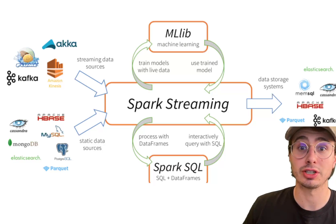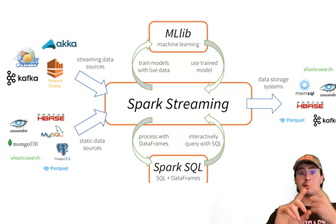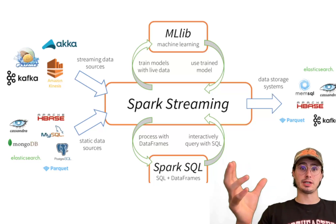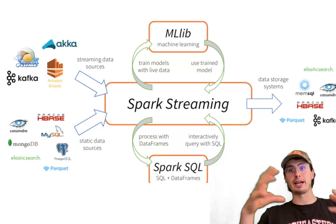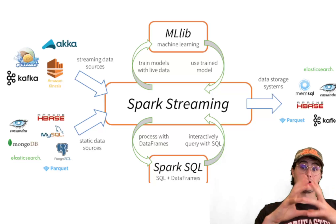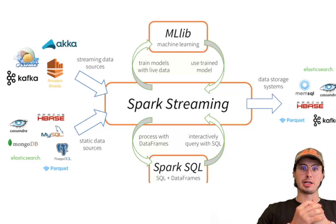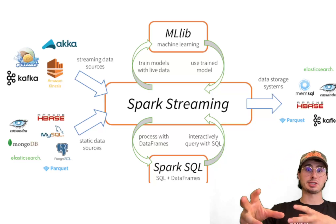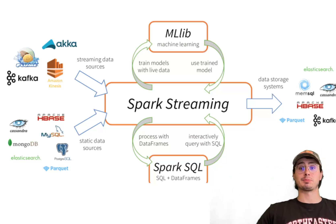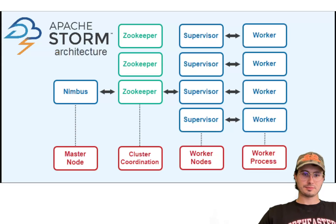Spark also provides a variety of APIs for different data processing needs. The core API is the RDD API, which provides a functional programming model for batch processing. Spark also includes DataFrame and Dataset APIs offering high-level abstractions for structured data processing, with optimizations from the Catalyst query optimizer. Spark Streaming extends those capabilities to handle real-time data streams using a micro-batch processing model. Developers can also use Spark SQL for SQL-based processing and machine learning libraries for building scalable ML applications. The unified nature of Spark's API allows seamless transitions between batch and stream processing.